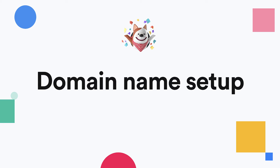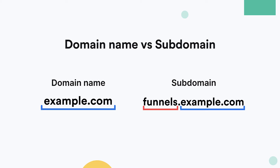Before we start, it's important to note the difference between your main domain name and the subdomains. The domain name is typically the name that you have bought from your registrar — in this example, it's example.com. A subdomain is anything that prefixes your domain name — in this example, it's funnels.example.com.